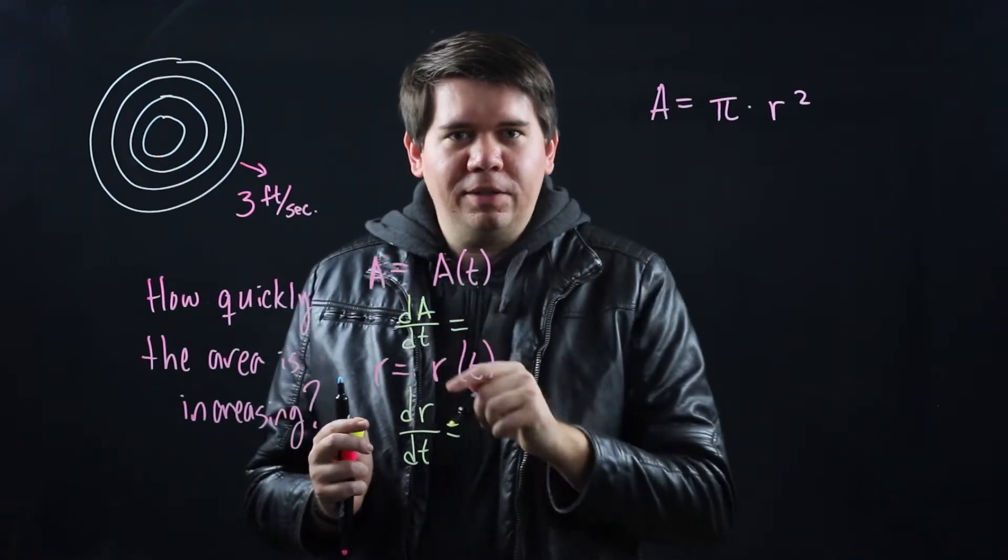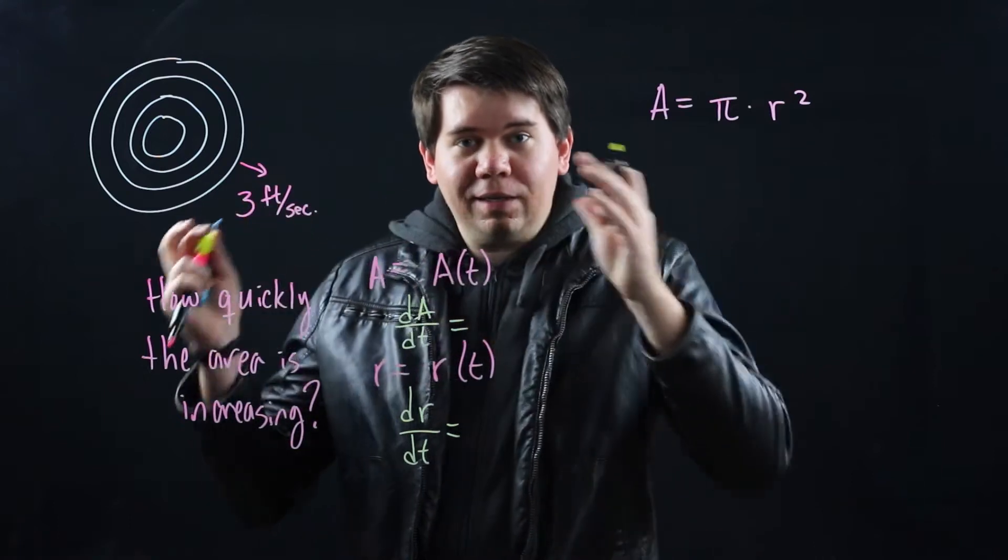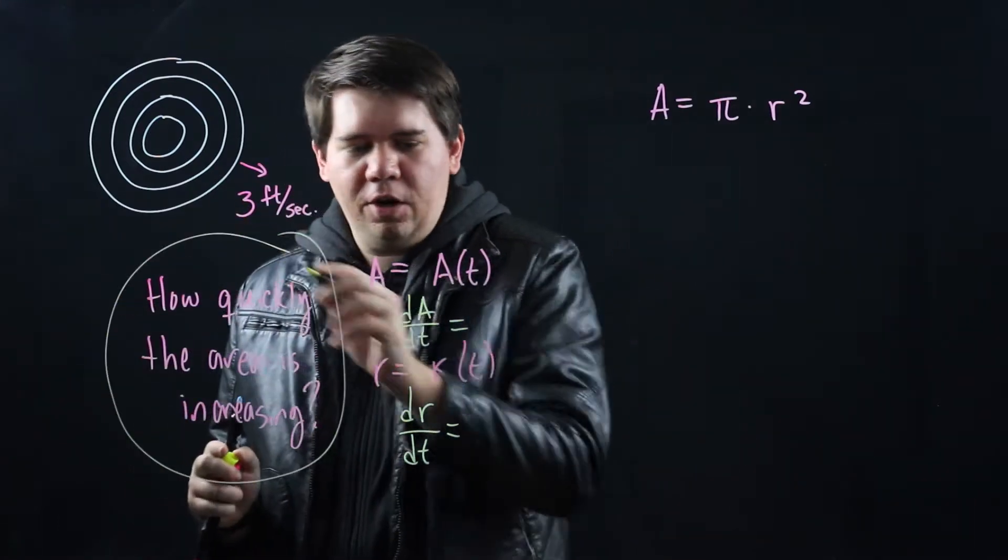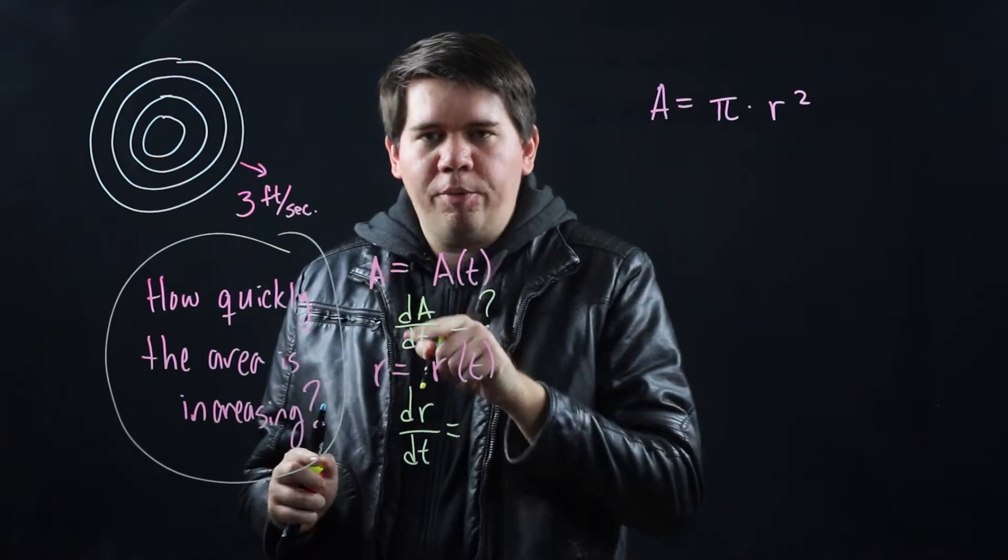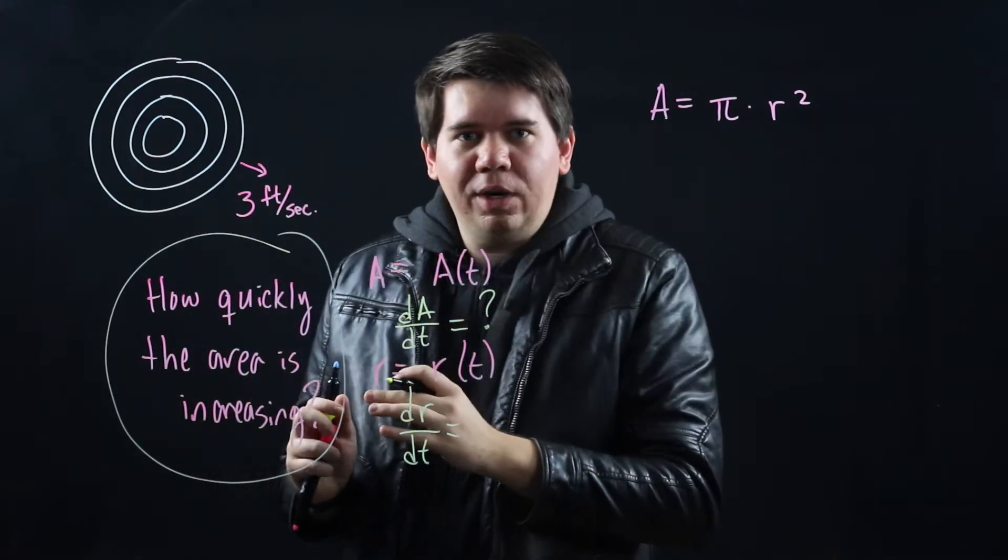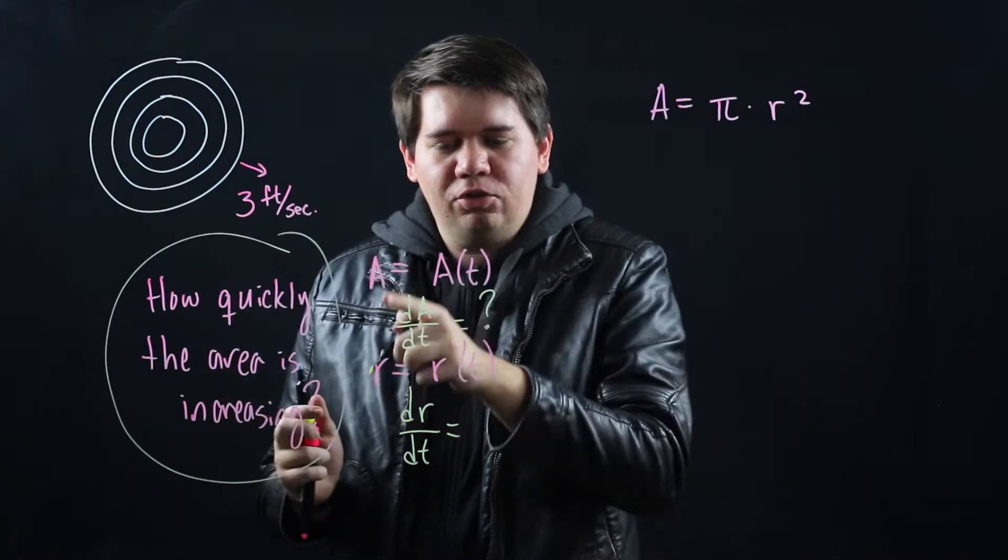The derivative of the area with respect to time tells you how quickly the area is increasing. That's exactly what we want to know. So this is our unknown. This is what we want to figure out. We're trying to figure out not what the area is, but how quickly the area is changing. That's what the derivative gives you.